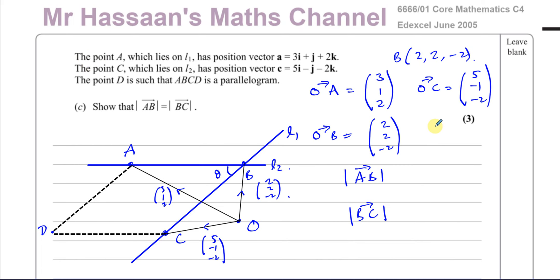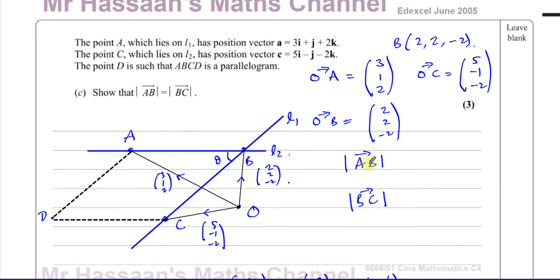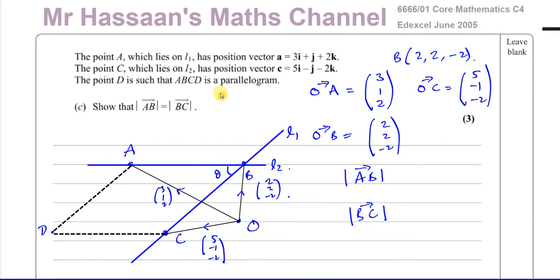That's three marks for Part C. Drawing clear diagrams is always a good idea in vectors — it helps you understand what's going on. For 3D diagrams you can't be perfectly accurate, but draw them to reflect known properties: same lengths, acute angles. Place the origin O somewhere out of the way so you can label the vectors clearly.